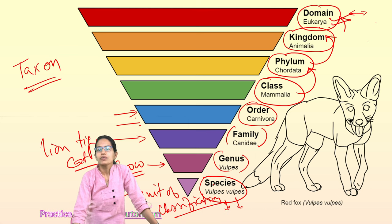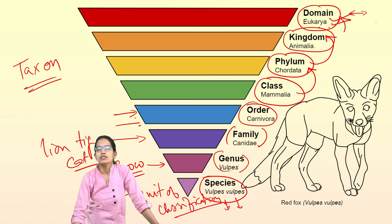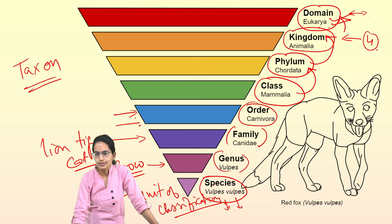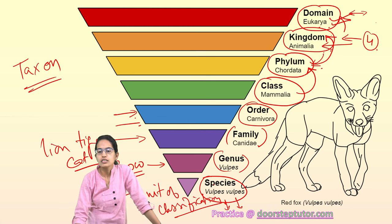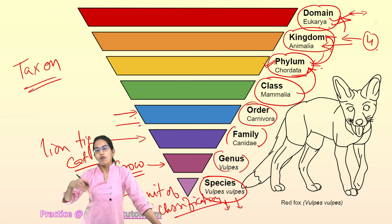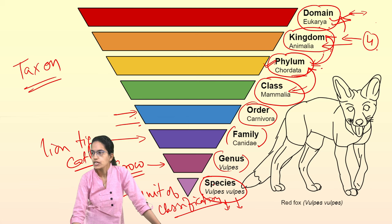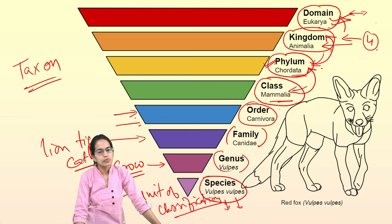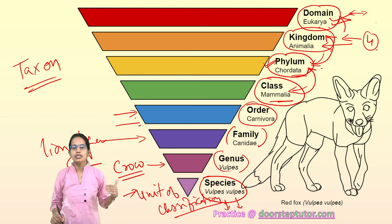Under the kingdom, we have the chordate and non-chordate classification, which comes under the phylum. Under the chordate classification, we have five classes: Aves, Pisces, Amphibia, Reptiles and Mammals. Mammalia becomes a class here. The highest level is domain, followed by kingdom, phylum, class, order, family, genus and species. Species is the lowest unit of classification.